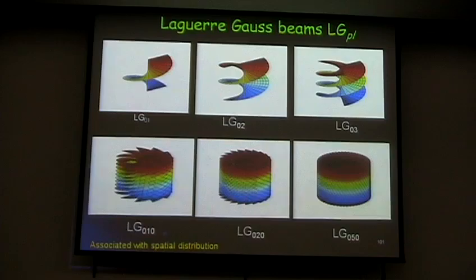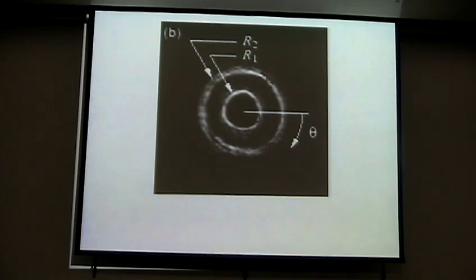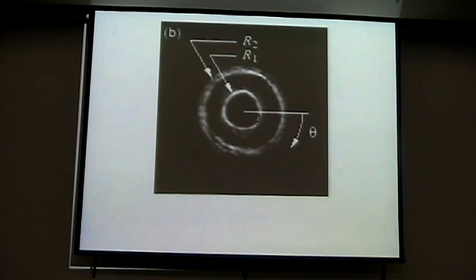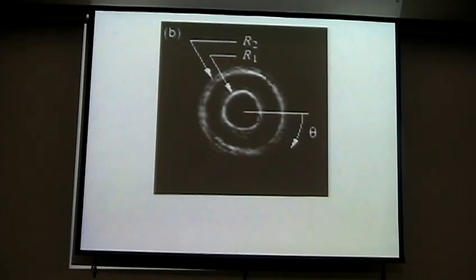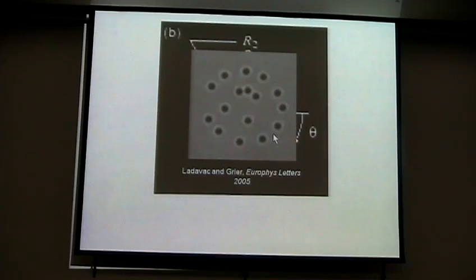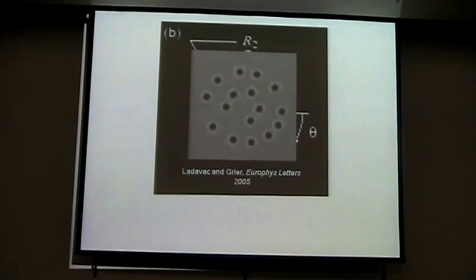I'll show you an example from Dave Grier's lab. Here we have two Gauss-Laguerre beams: one with charge 60 and one with charge −30, so the sense of rotation is in opposite directions. Any particles placed on the circumference of these rings should rotate in opposite directions — and here we go, it's pretty impressive. This can be used for sorting particles by size.